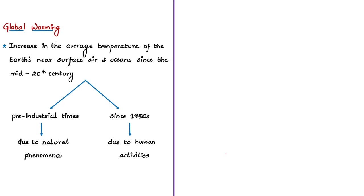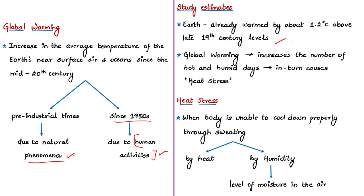After the 1950s, global warming has mainly occurred due to human activities like fossil fuel burning and deforestation. The study tells that the Earth has already warmed by about 1.2 degrees Celsius above late 19th century levels, and under present greenhouse gas emission levels, Earth is expected to warm by 3 degrees Celsius by 2100. Every bit of global warming makes hot human days more frequent and intense, causing heat stress. Heat stress is a condition when the body is unable to cool down properly through sweating.